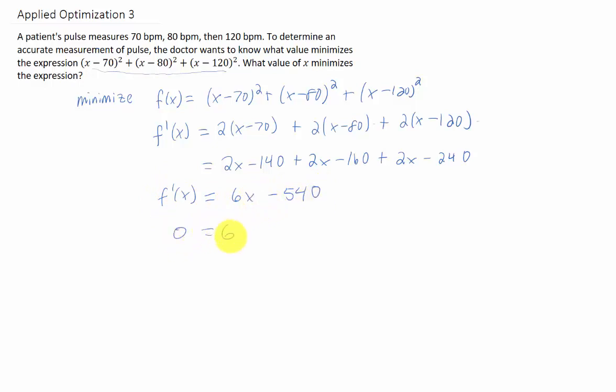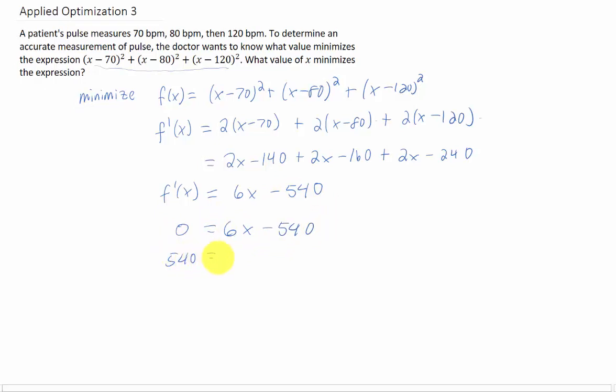Now to find critical points, we set that first derivative equal to 0. I'm going to add 540 to both sides. And if I divide both sides by 6, I am getting 90.